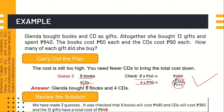It was checked that 8 books will cost 480 pesos and the CDs will cost 360 pesos, and the 12 gifts have a total cost of 840 pesos. The correct answer is: Glenda bought 8 books and 4 CDs. Altogether she spent 840 pesos. That would be the Guess and Check strategy under problem solving.